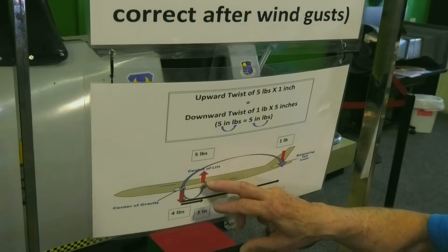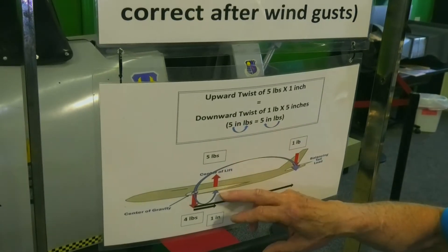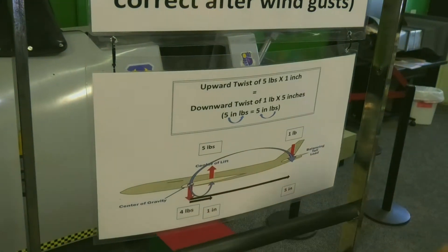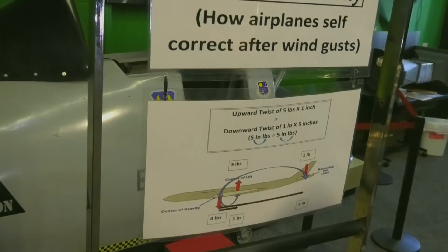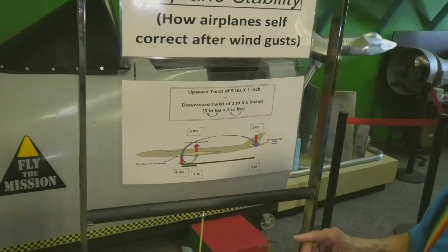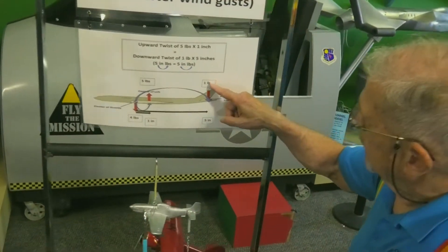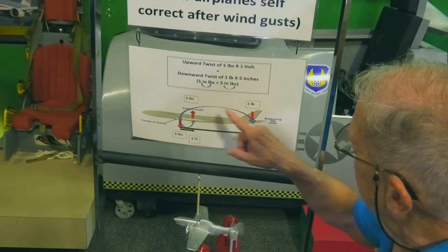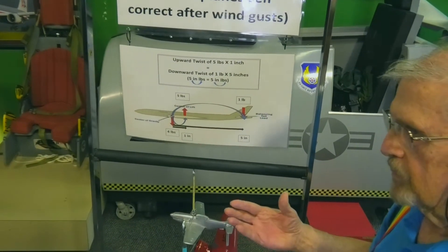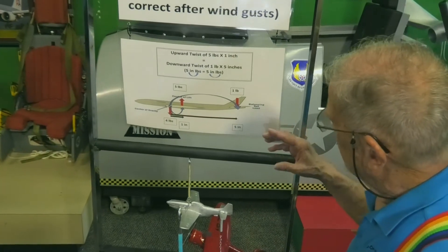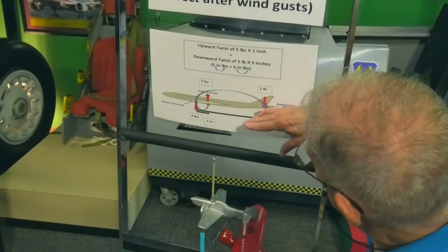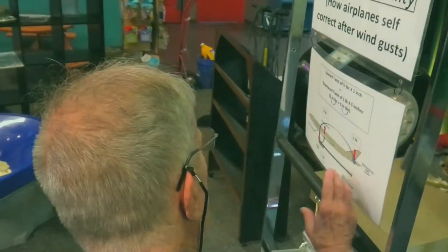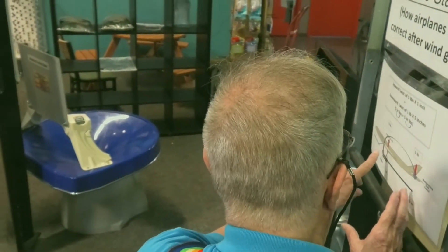Here is the center of lift from the wings, pulling up five pounds, but the airplane only weighs four pounds. Why is there a difference? In order to have the airplane be stable, the tail is pushing down one pound. Five minus one equals four pounds. The reason is that this wing is pulling up and the tail is pushing down, so the airplane is in perfect balance.